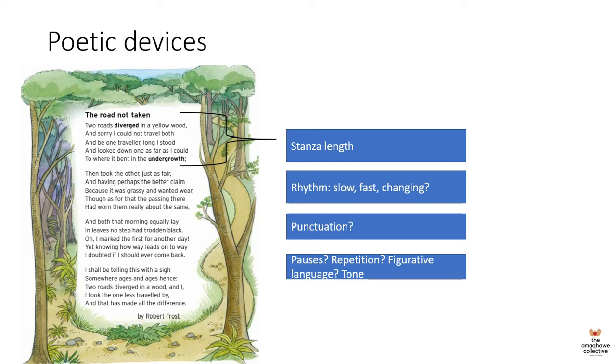Another poetic device is the tone. And tone refers to the overall mood of the poem. That's how it sounds to you, how it makes you feel, how you read it with feeling. Tone is also created with word choice, with the sounds of words and rhythm. So it's important that when you analyze the poem, that you are aware of the poetic devices that the poet has used as it will help you to understand the meaning of the poem and also express it in your own words.